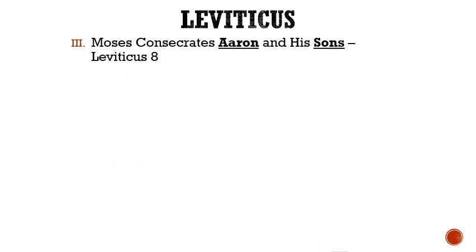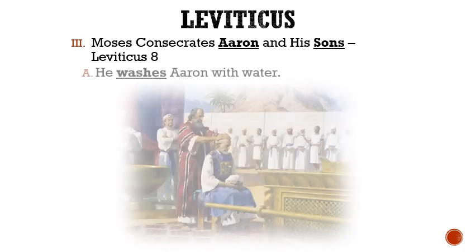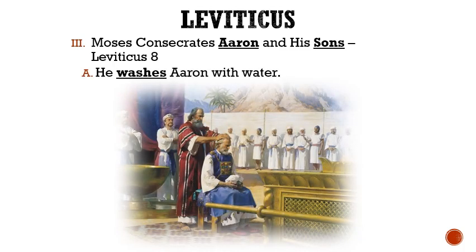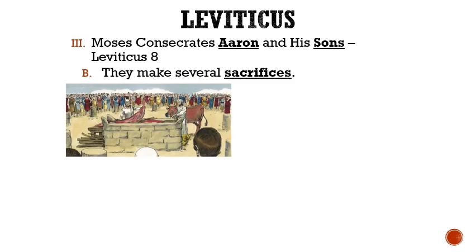Roman numeral 3: Moses Consecrates Aaron and His Sons. Letter A: He washes Aaron with water. Letter B: They make several sacrifices. After Aaron and his sons were baptized, Moses, Aaron, and Aaron's sons offered a young bull as a sin offering, but they burned it outside the camp.